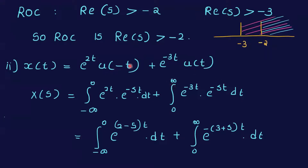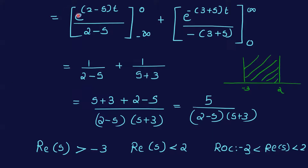Evaluating the first integral from -infinity to 0: e^((2-s)t), and the second integral from 0 to infinity: e^(-(3+s)t) dt, divided by -(3+s), evaluated from 0 to infinity.